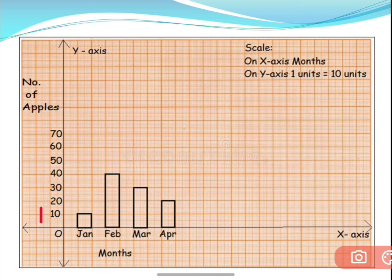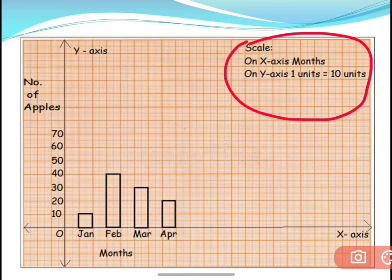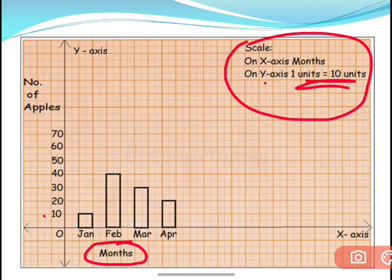You have to write the scale here. On x-axis you have months — January, February, March, April — whatever they have given in the table. On y-axis, you have taken one unit is equal to 10 units, and that you need to mention. We are taking 10 units as one unit, so you need to mention here: one unit is equal to 10 units.